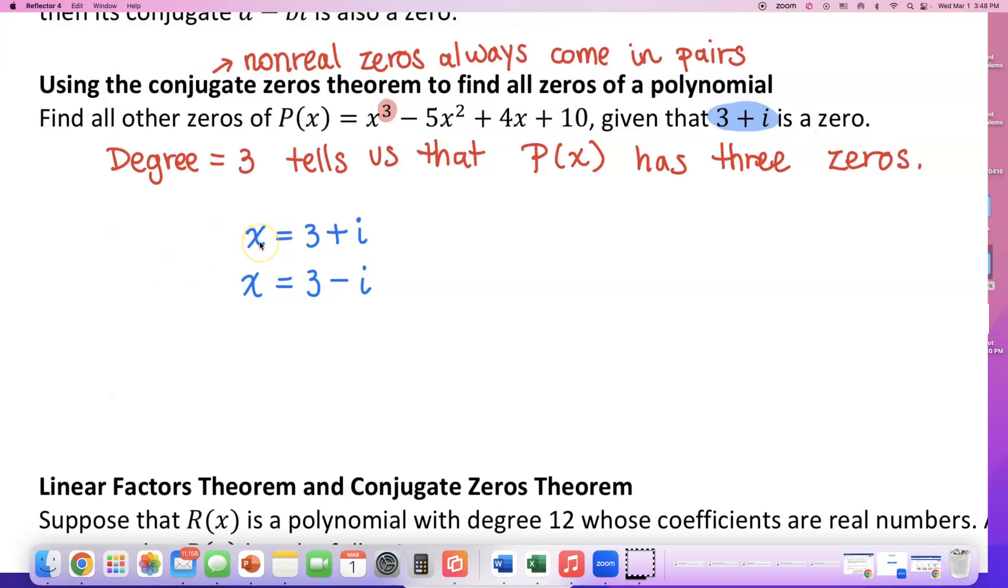Look at how many answers we got so far. We have one answer that was given to us in the problem. The second one we found out using the conjugate zeros theorem. Now remember, we have three zeros of this polynomial. We found two answers so far. So how many answers are left? One.